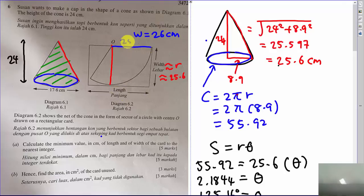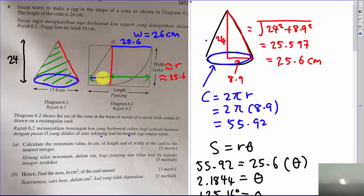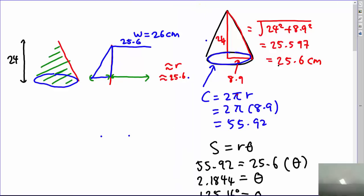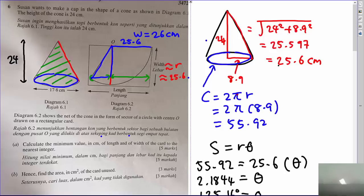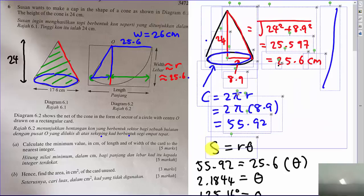For the length, I know this side is 25.6. I need to find the extra horizontal distance beyond the radius. Looking at the diagram, I can see there is a right triangle formed, so I sketch that right triangle to work out the additional length.